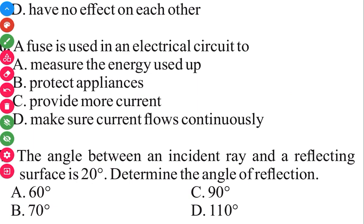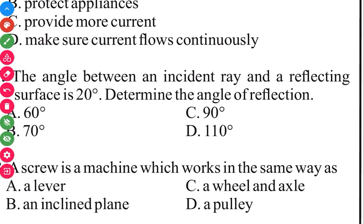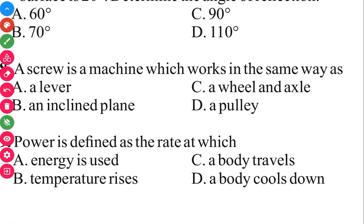A screw is a machine which works in the same way as an inclined plane. The answer in 3, 2, 1 is an inclined plane. The reason why it's an inclined plane is when a paper is folded around a pencil and you keep moving it back and forth, you're going to have a linear motion, and that is what an inclined plane does.